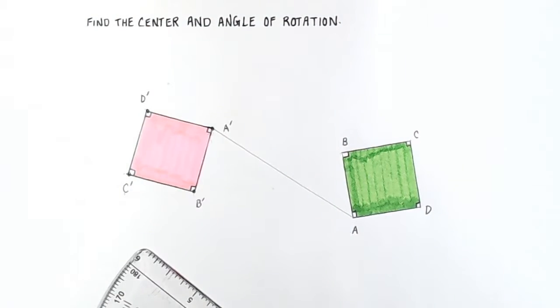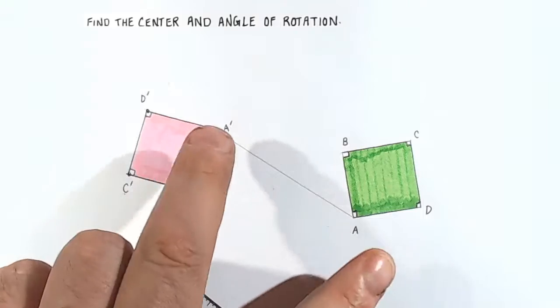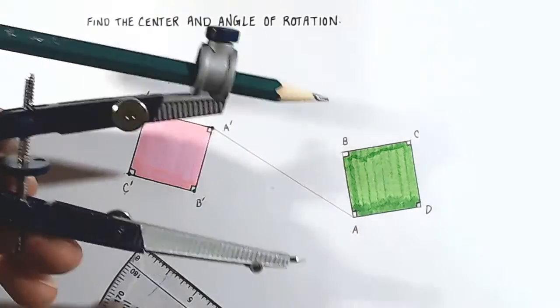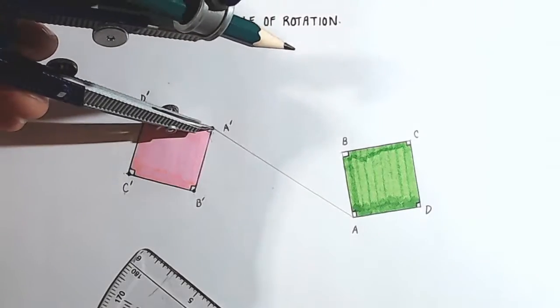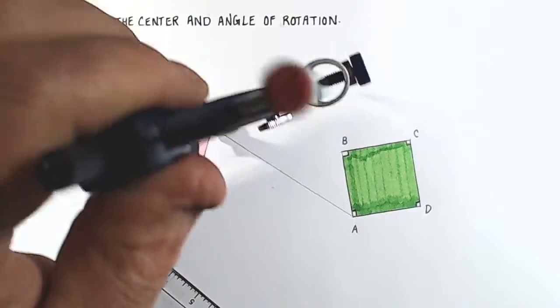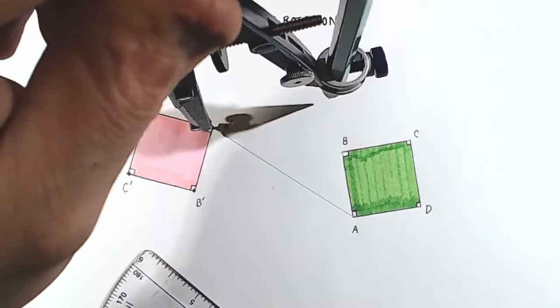Okay, so now we've drawn a line segment connecting A with A prime. Now what we want to do is construct a perpendicular bisector to this line segment A, A prime. And the way we do that is we take our compass and position the pointy end on point A prime, and we're just going to draw a couple of arcs like this.